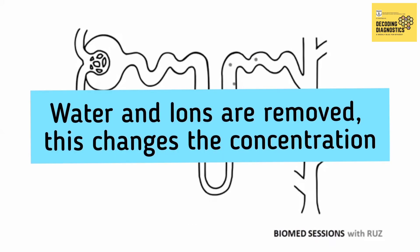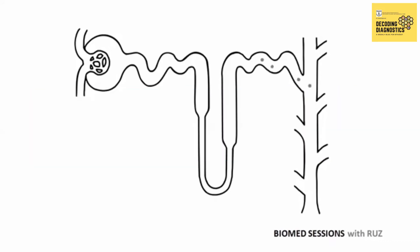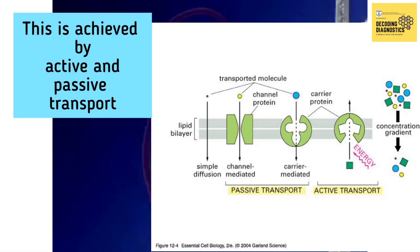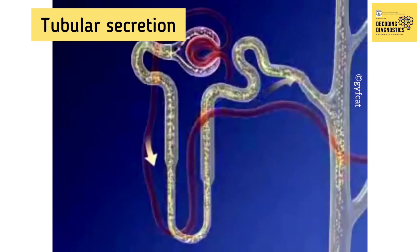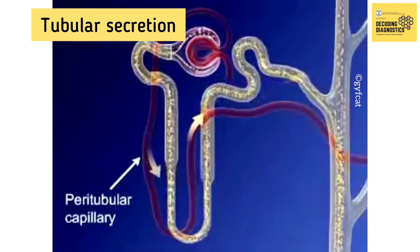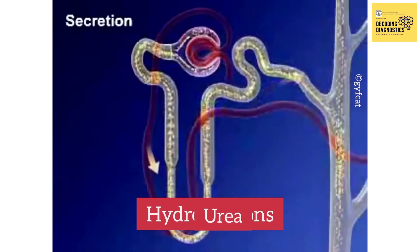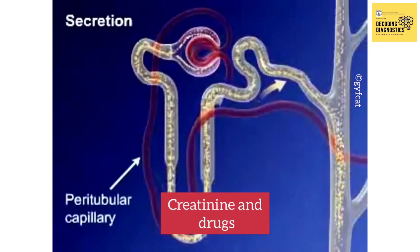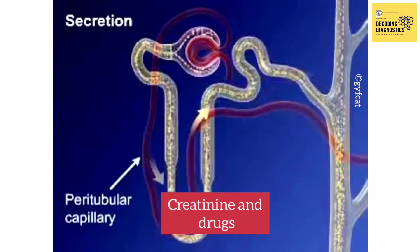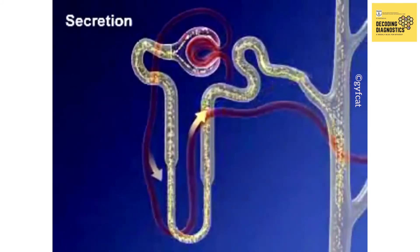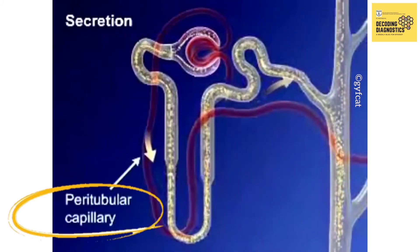As water and ions are removed, the ion concentration changes. This is achieved by active and passive transport. During tubular secretion, some substances such as hydrogen ions, urea, creatinine, and drugs are removed from the blood through the peritubular capillary network into the collecting duct.